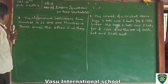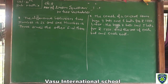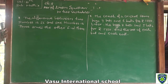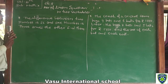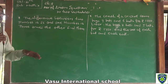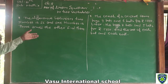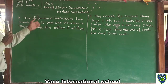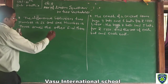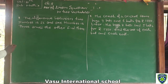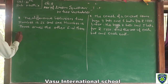The difference between 2 numbers is 26 and one number is 3 times the other. Find the numbers. Here a problem solving type of sum is given. We have to convert it into a linear equation and then the solution is given by using the substitution method.